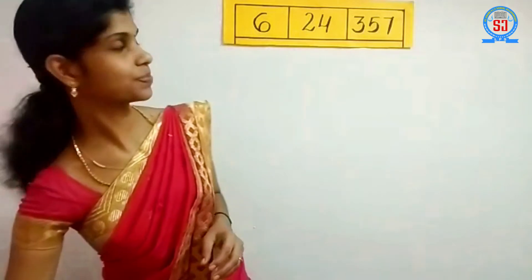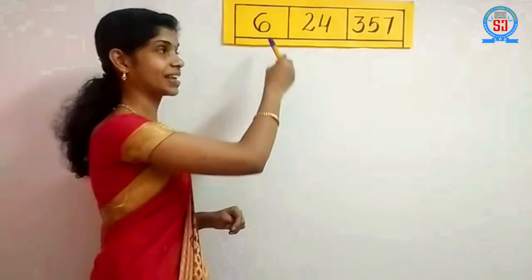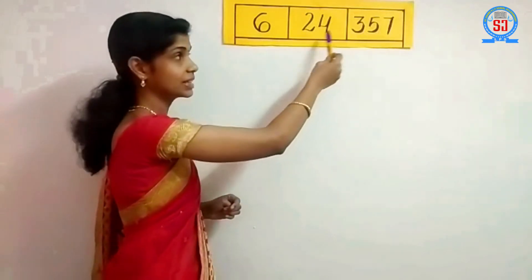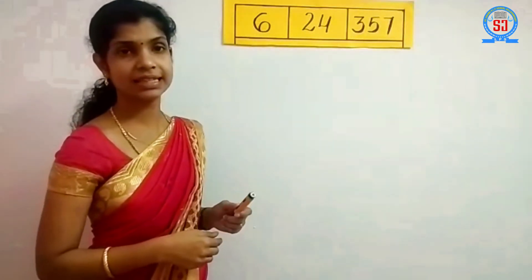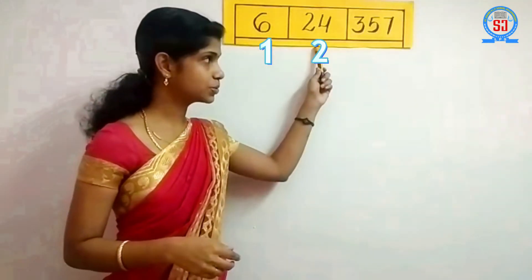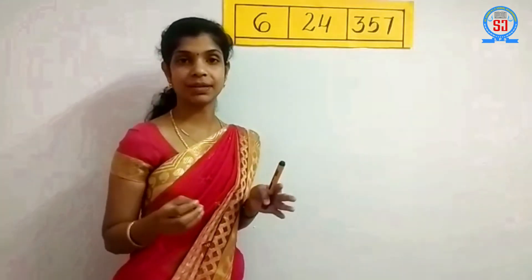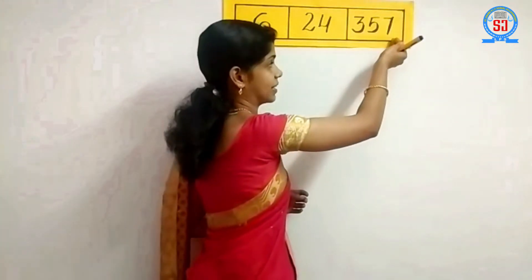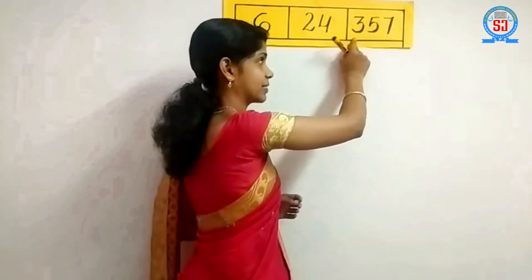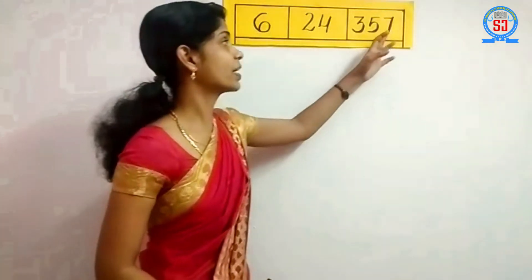Now I will show you some numbers. Can you see these numbers? Can you read this — 6, 24, 357? Can you say how many digits are there in this number? One, two, three. We used to read the number according to the place values. If we take this number, we read the place value from this side: one, ten, hundred.